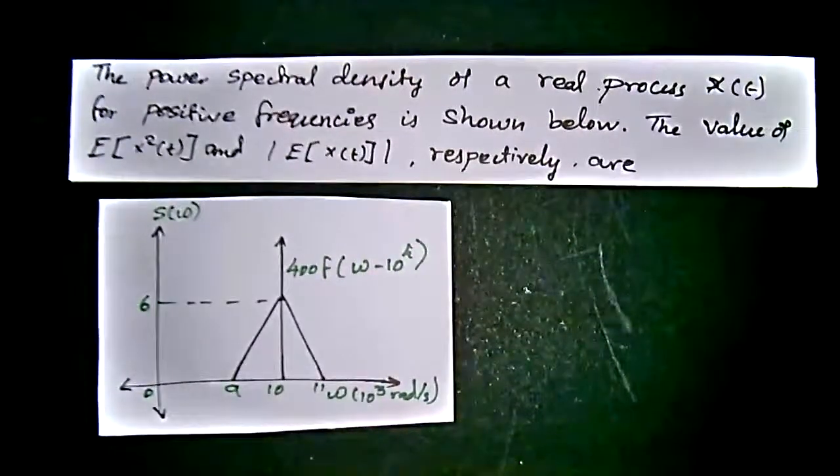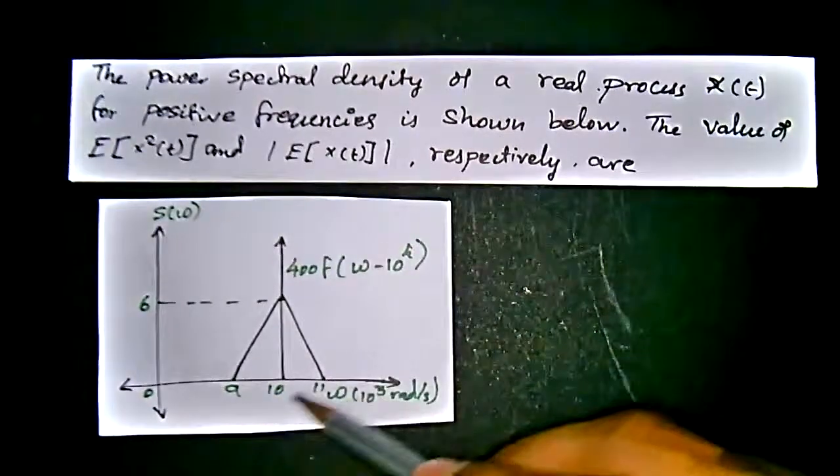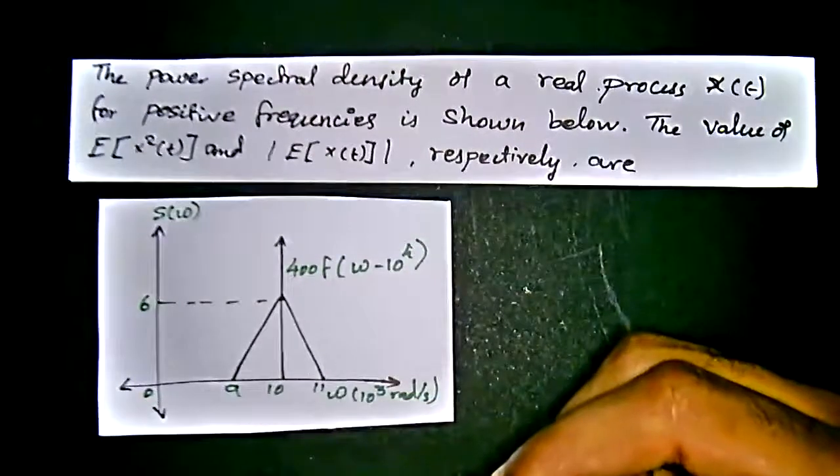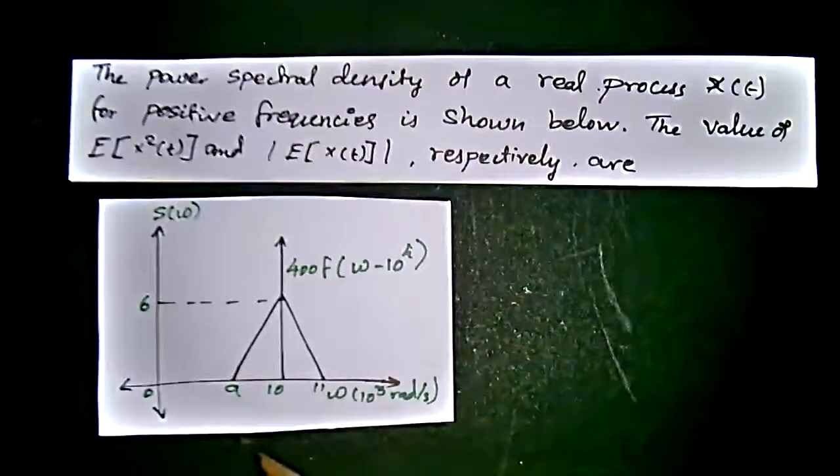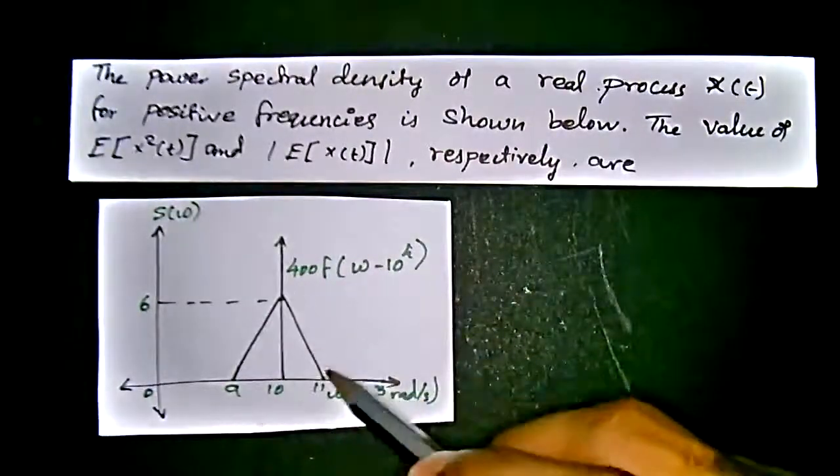The power spectral density of X(t) is given like this, a ramp signal. We can see this as electronic communication, where we say a ramp signal.